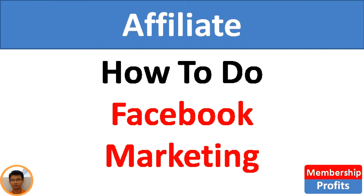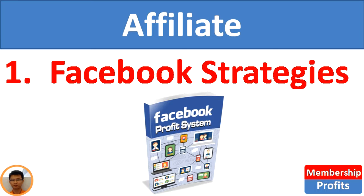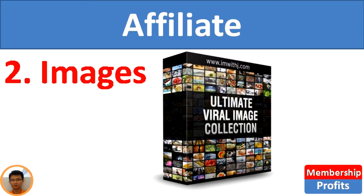The first role is being an affiliate. The role of an affiliate is simple — you help your target audience achieve their goal and you get paid by recommending products and services. For example, my audience would like to learn how to market their products and services on Facebook. They will need two things: Facebook strategies and images. As an affiliate, I will inform my audience about an e-book regarding Facebook marketing strategies. They buy the e-book and I'm paid a commission. The same goes for images — I inform my audience about an image pack, they buy the package, and I'm paid a commission.